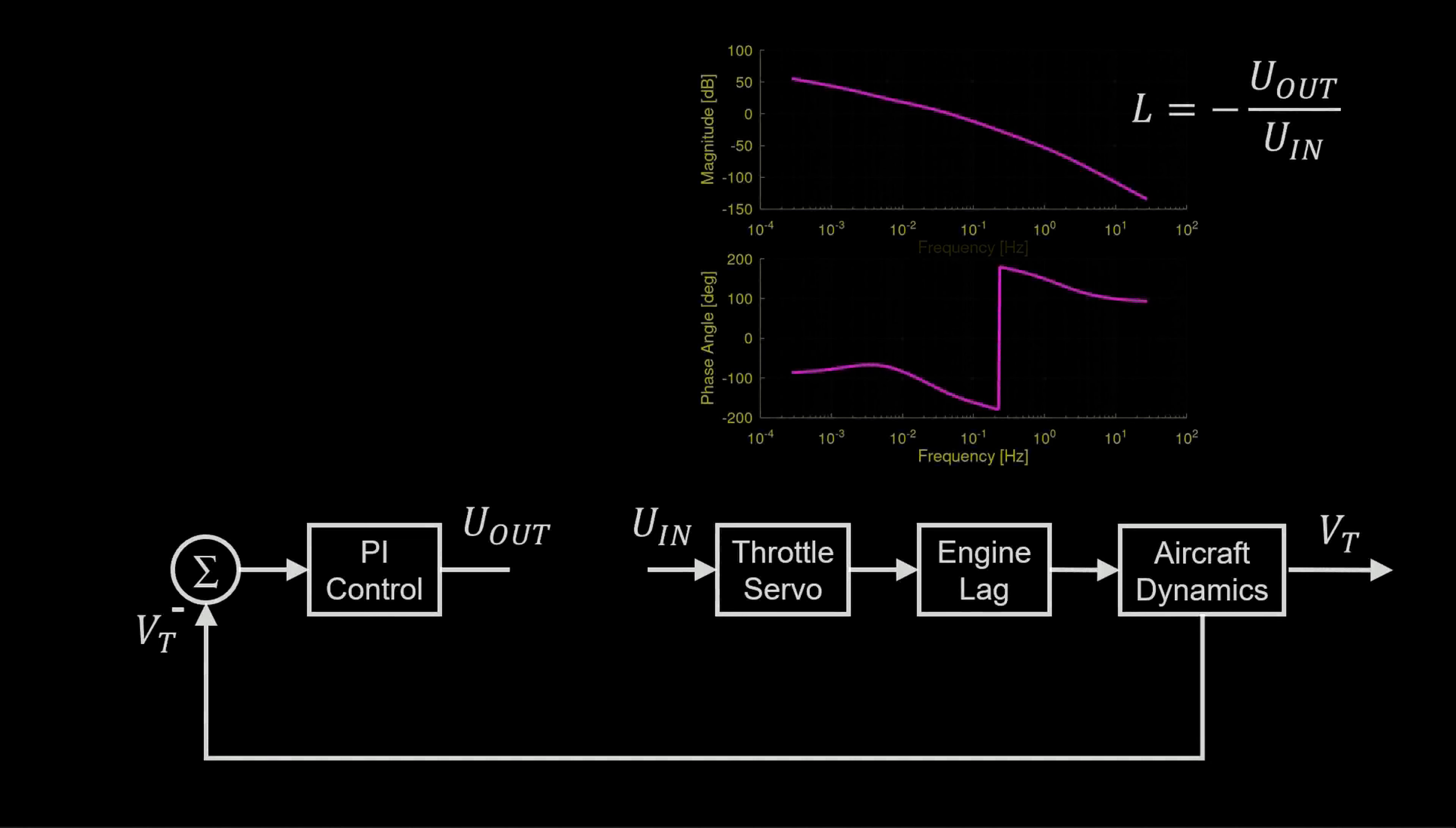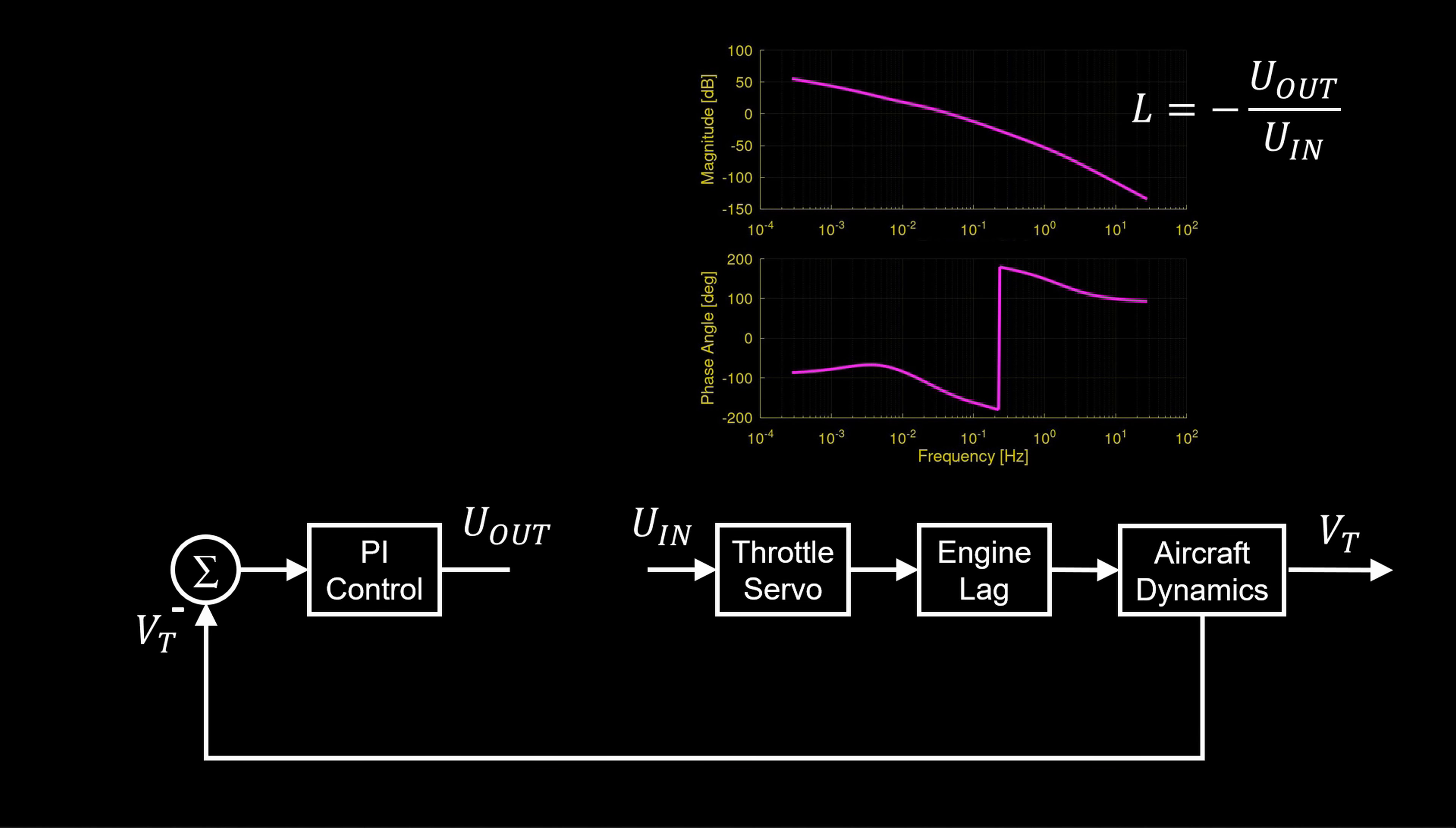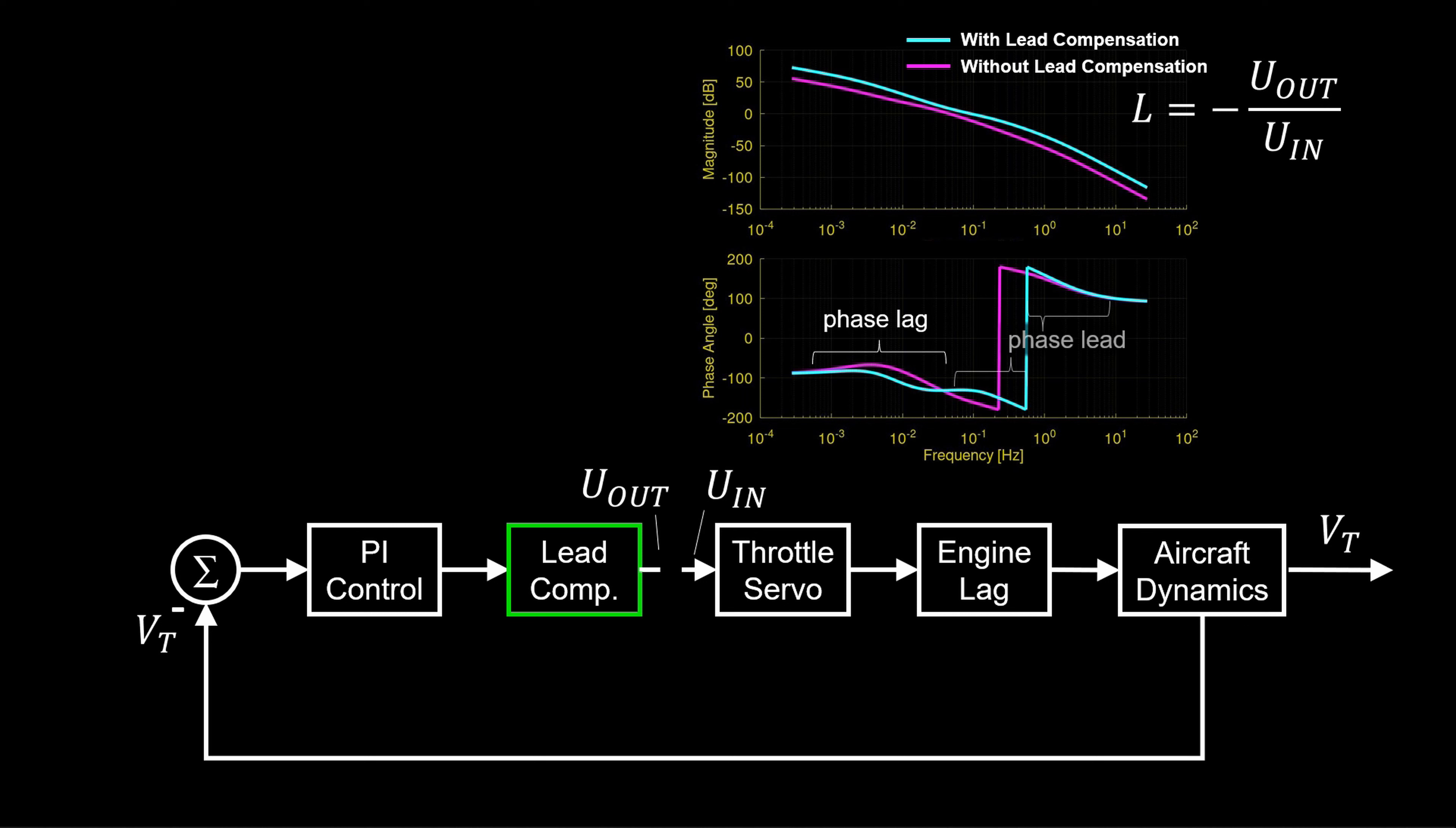The Bode plot of the loop gain without the lead compensator here is shown. Now with the lead compensator, we see larger magnitude at all frequencies. This is consistent with the smaller gain margin of the lead compensated loop gain. And although it's lead compensated, as we saw before, we have phase lag at low frequencies and phase lead at high frequencies.